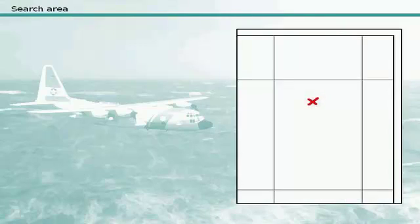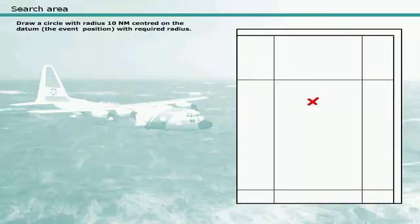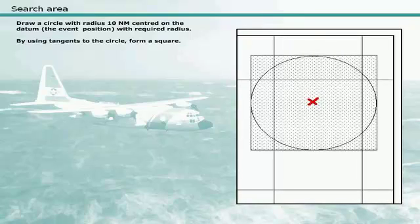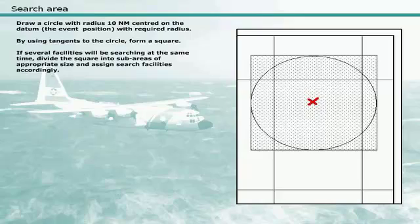A search area can be plotted by the following procedure: draw a circle with radius 10 nautical miles centred on the datum with the required radius. By using tangents to the circle, form a square. If several facilities will be searching at the same time, divide the square into sub-areas of appropriate size and assign search facilities accordingly.